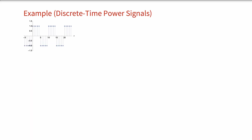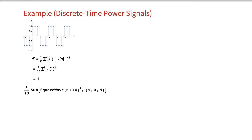For the discrete time signal shown here, the average power can be computed by taking the summation over a period of the signal. The period is 10, we replace x(n) with 1, and the average power will be 1. Also computing the value using the Wolfram Language, we get the same value.